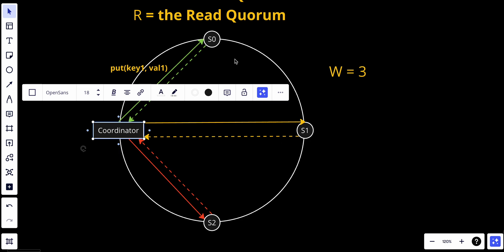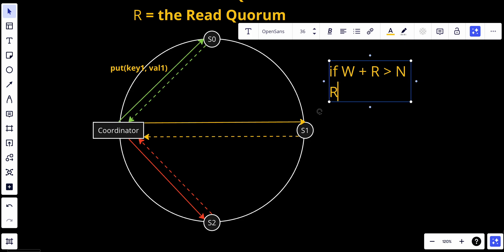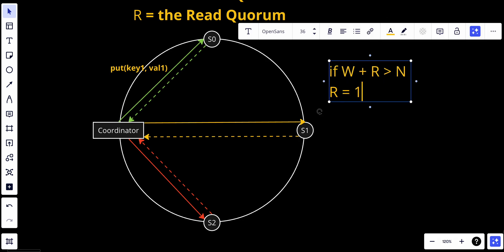Let's say that if W equals three, the coordinator will have to get acknowledgement from S1 and S2 and S0 to consider any write operation as right. If W plus R is bigger than N, the system has strong consistency. Strongest consistency is guaranteed in this system because there must be at least one overlapping node that has latest data to ensure consistency.